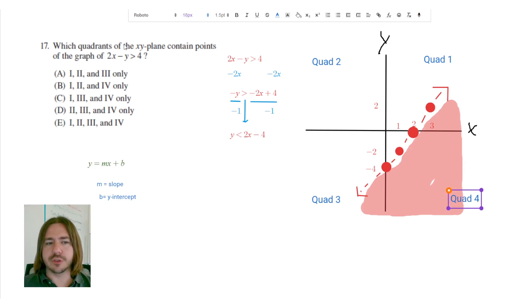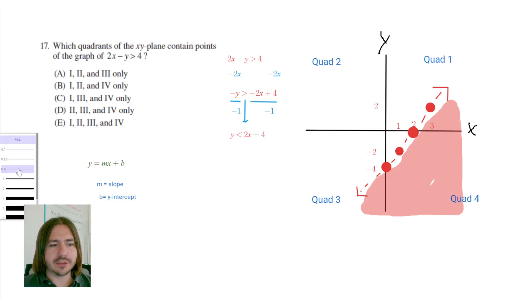So the question is asking in which quadrants do the solutions lie, or what quadrants of the xy plane contain points of this inequality. So any quadrant that's going to have shading in it is going to count. And we can see that there is shading in quadrants one, three, and four. So that's going to be our answer for this problem.